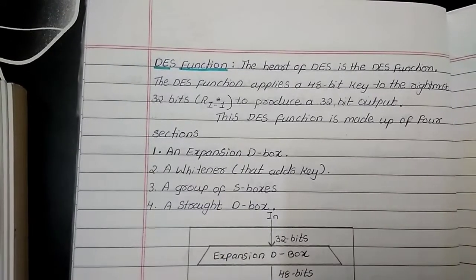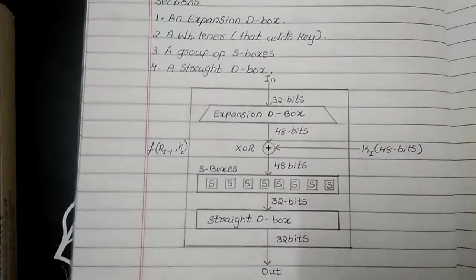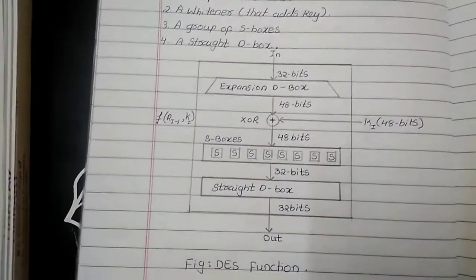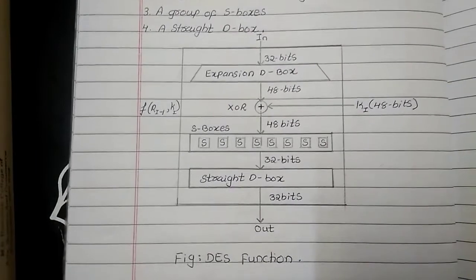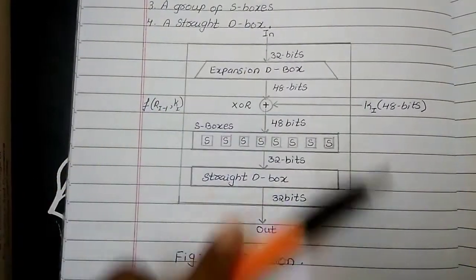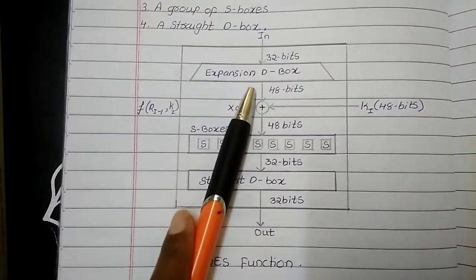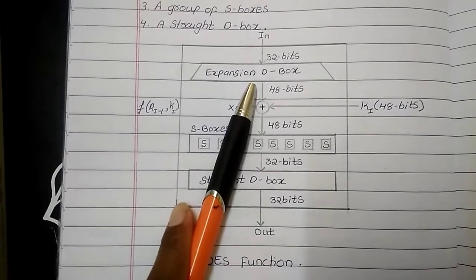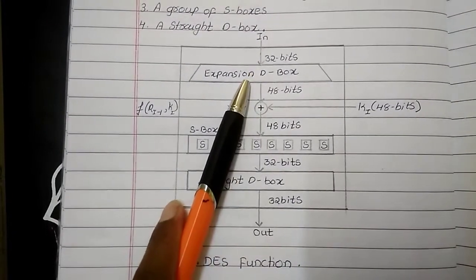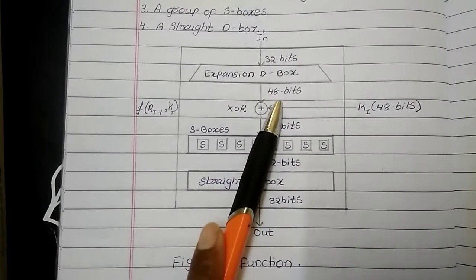Now, let us see the DES function with the help of a diagram. If we see the DES function with the help of diagrams, this is your DES function. This function box is using input of 32-bit which is applied to expansion D-box. So, this expansion D-box is going to expand this 32-bits in the form of 48-bits.